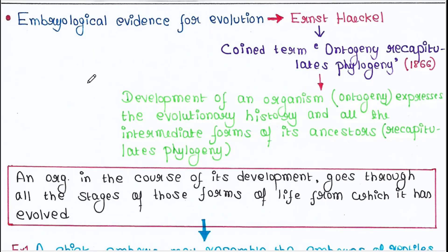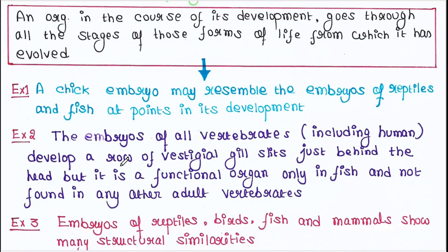Haeckel means that an organism in the course of its development goes through all the stages of those forms of life from which it has evolved. For example, a chick embryo may resemble the embryos of reptiles and fish at points in its development. Another example: the embryos of all vertebrates, including humans, develop a row of vestigial gill slits just behind the head, but it is a functional organ only in fish and not found in any other adult vertebrates.